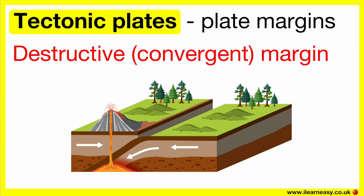Destructive plate margin, also known as convergent. This is when the plates move towards each other. This results in the plates smashing against each other. It can either push both upwards, which forms fold mountains, or one plate goes under and the other is pushed up. This forms deep trenches or results in earthquakes.